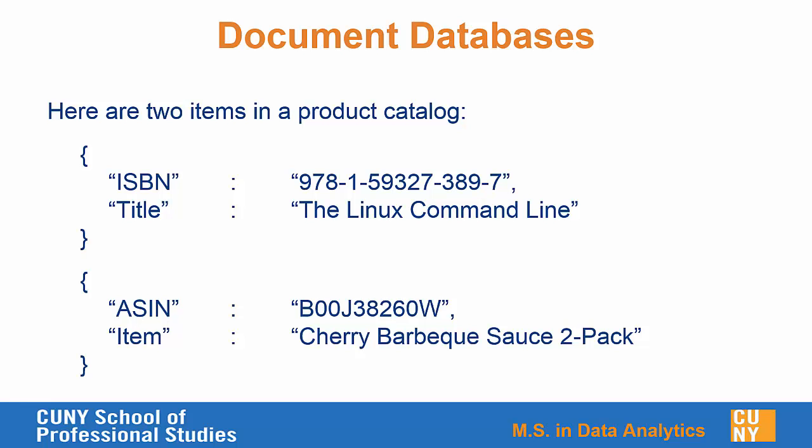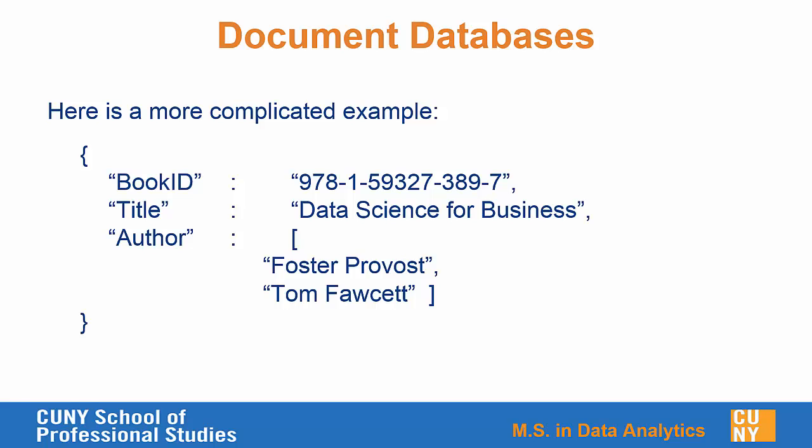We can also store more complicated documents. Here's an example of a book with two authors. We have a book ID, the title, and then in the key-value pair for the author we have a more complicated, nested object with two different authors. So document databases allow for more complex structure than just a simple row.